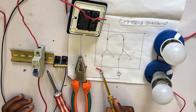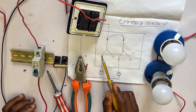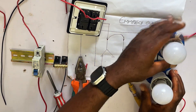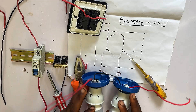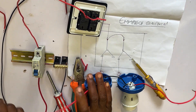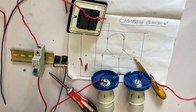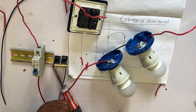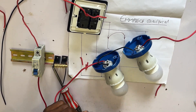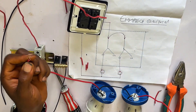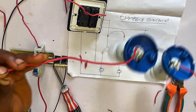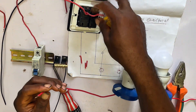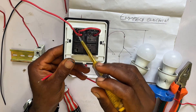Now let's go ahead and connect our bulbs. Our first bulb is connected to L1 of the first gang, and the second bulb is connected to L1 of the second gang. This first bulb connects to L1 of the first gang — you can see L1 here.